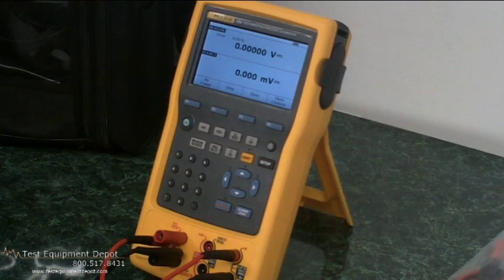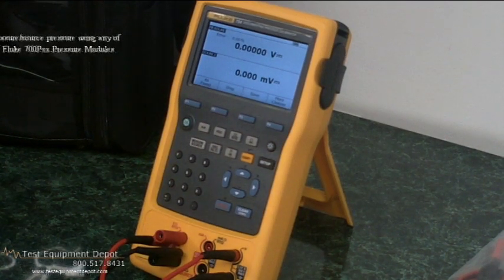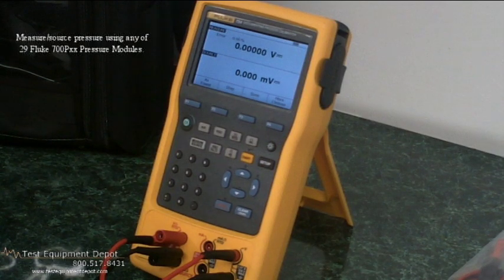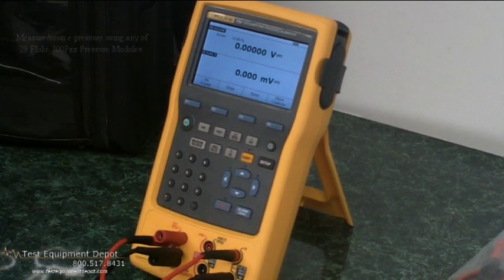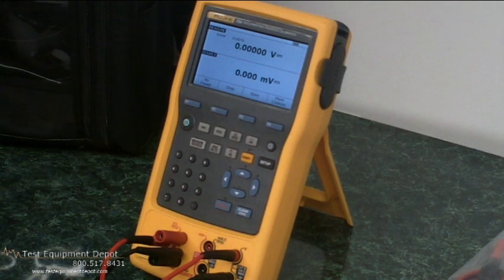You can measure and source any one of the 29 Fluke pressure modules, and you can also create and run as found and as left calibration procedures that will help you record and document your results.